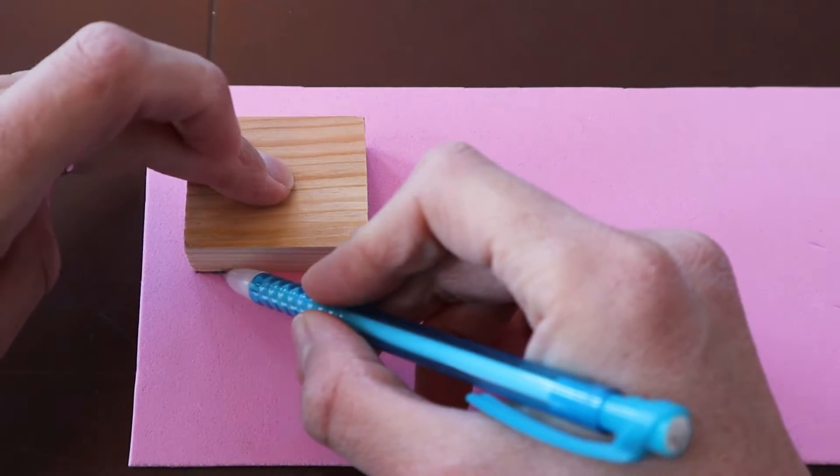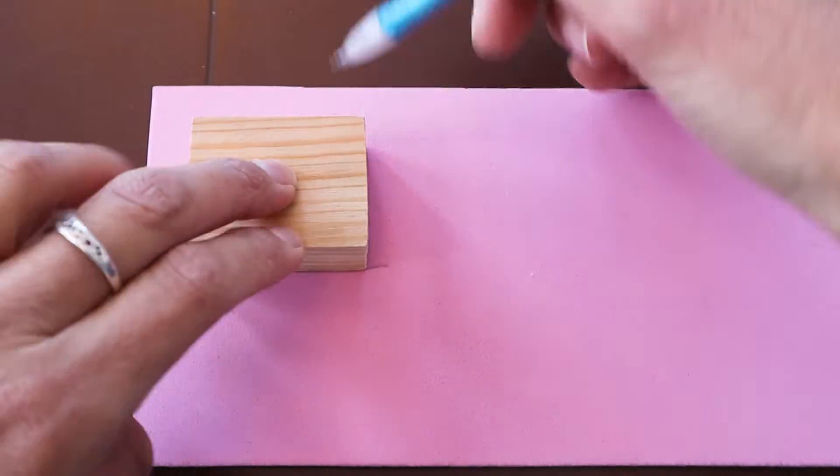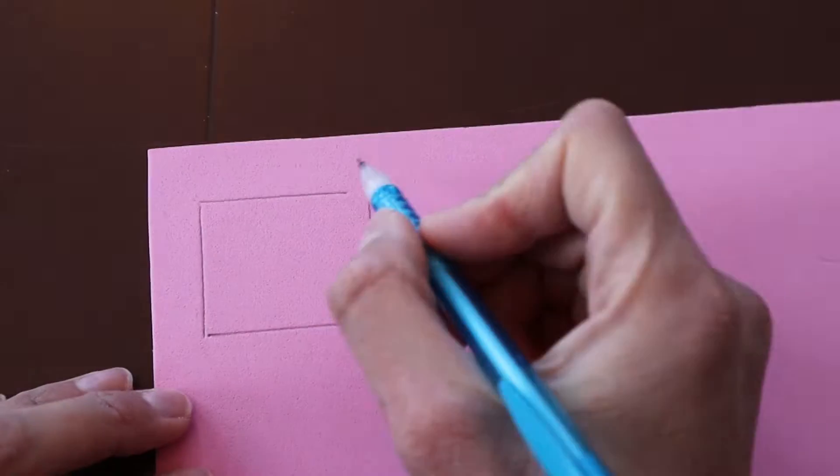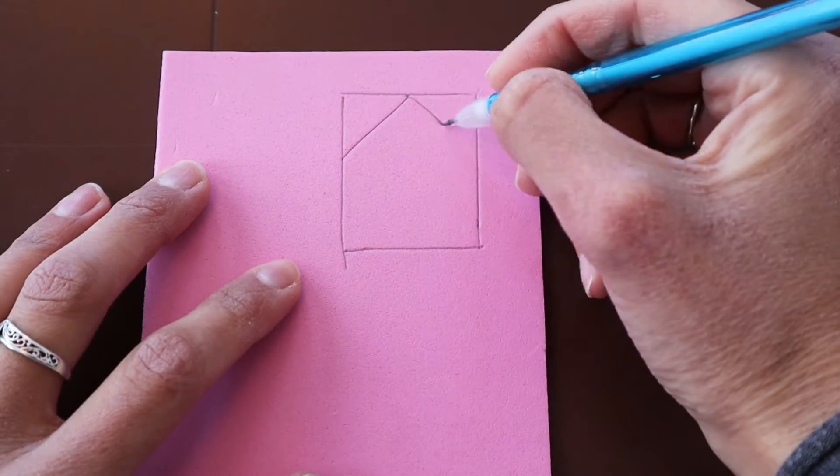To make our stamps, we're going to be cutting out shapes from the craft foam that we're going to be gluing to our wooden blocks. Start by tracing the wooden block onto the craft foam. Within that tracing, draw your stamp design.